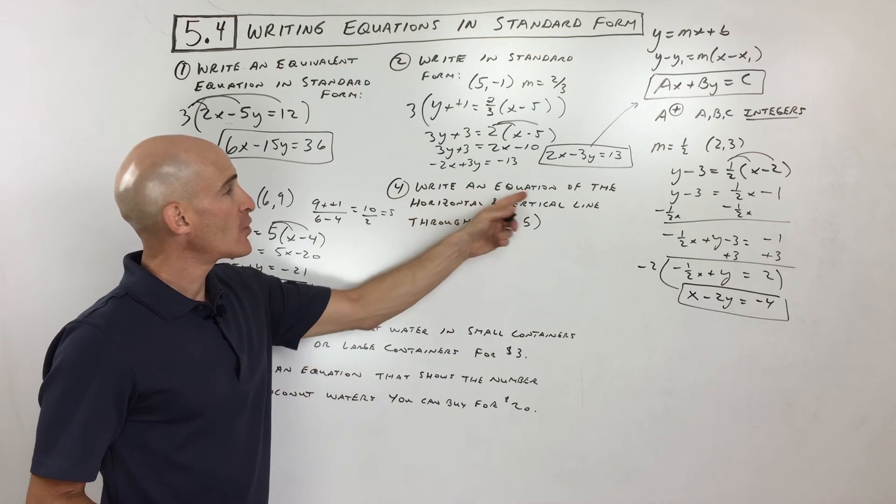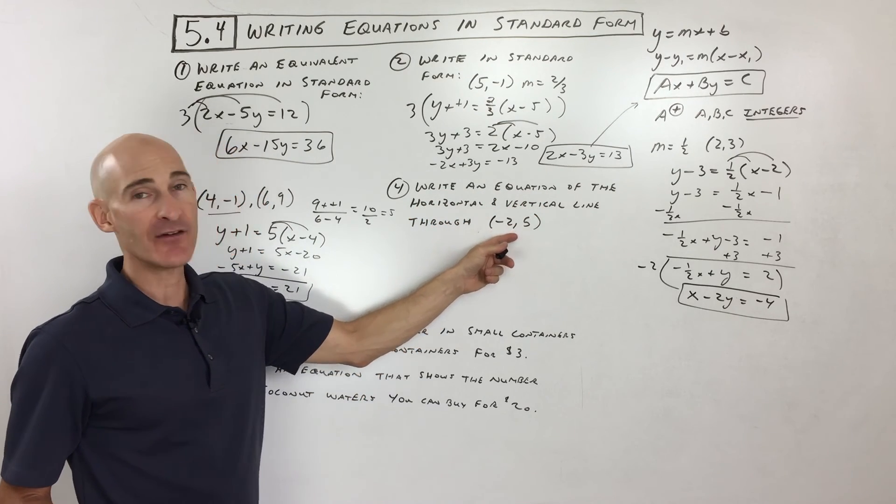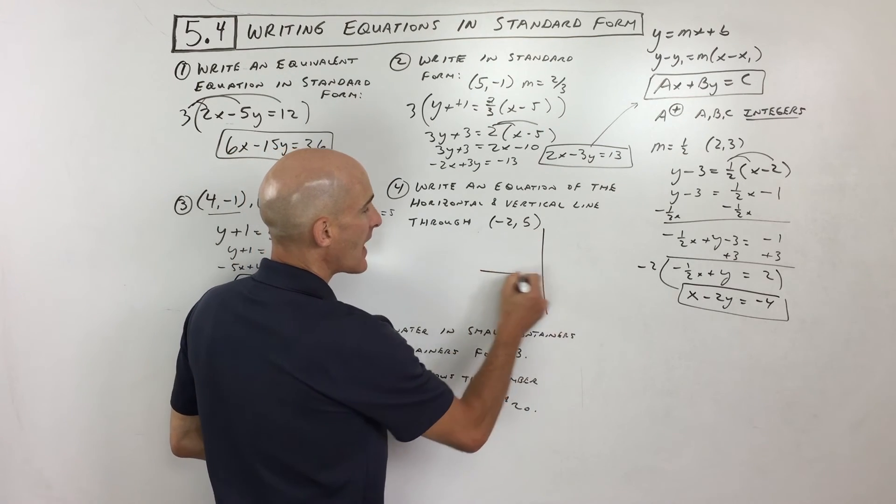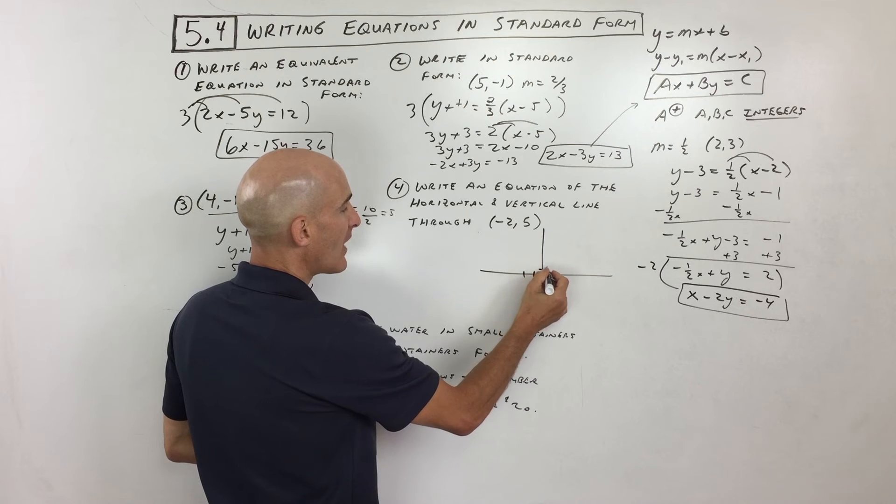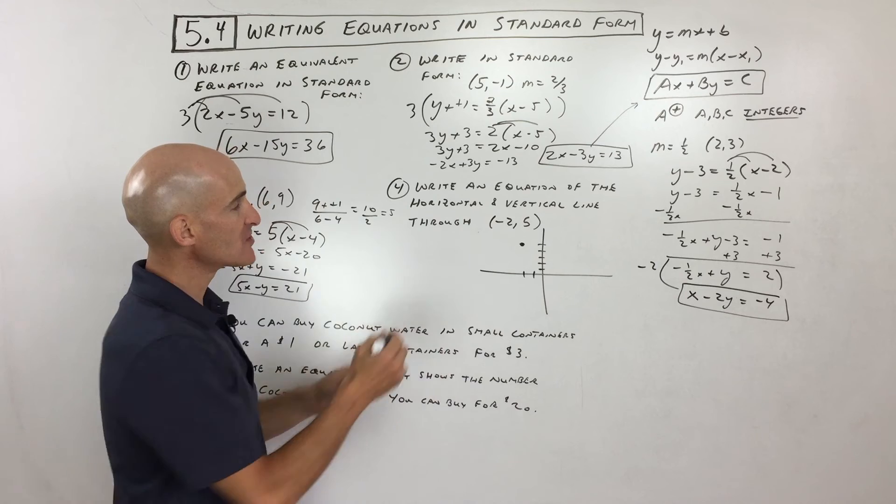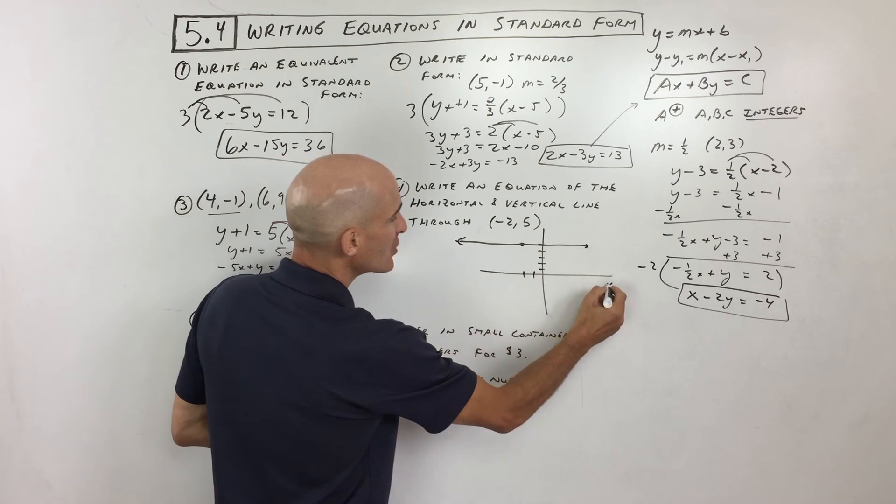Okay, number 4, write an equation of the horizontal and vertical line through the point negative 2, 5. So a lot of times what I like to do is just draw a diagram so I can kind of visualize what's happening here. So negative 2, 5 is right about there. Okay, now if we want to find a horizontal line, that's going to be a line that looks like that, right?